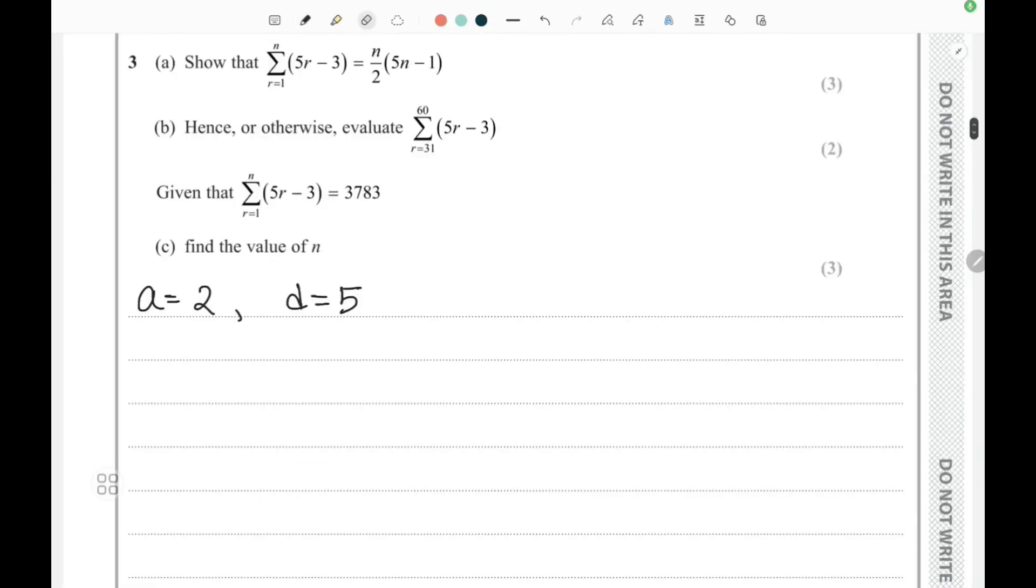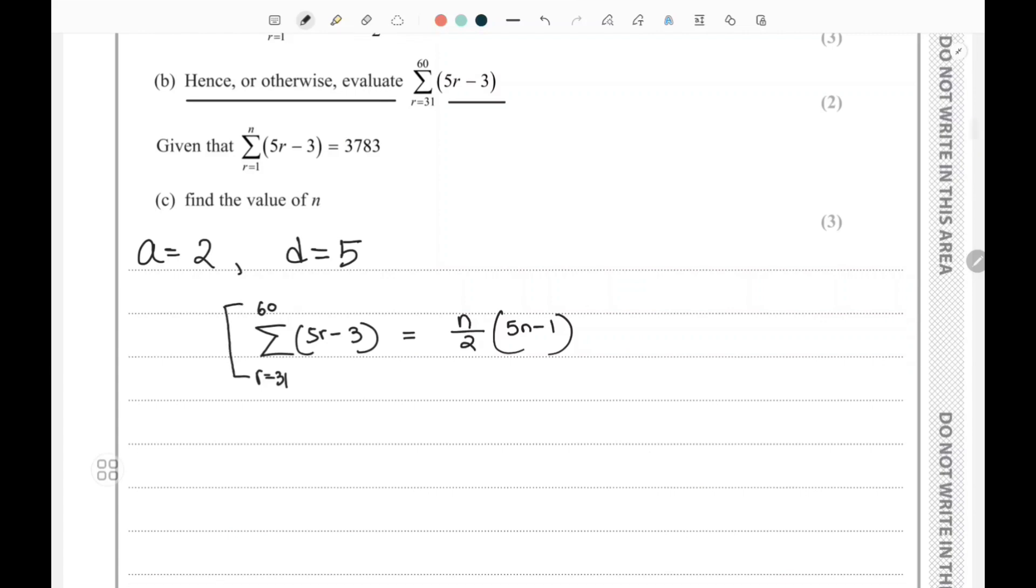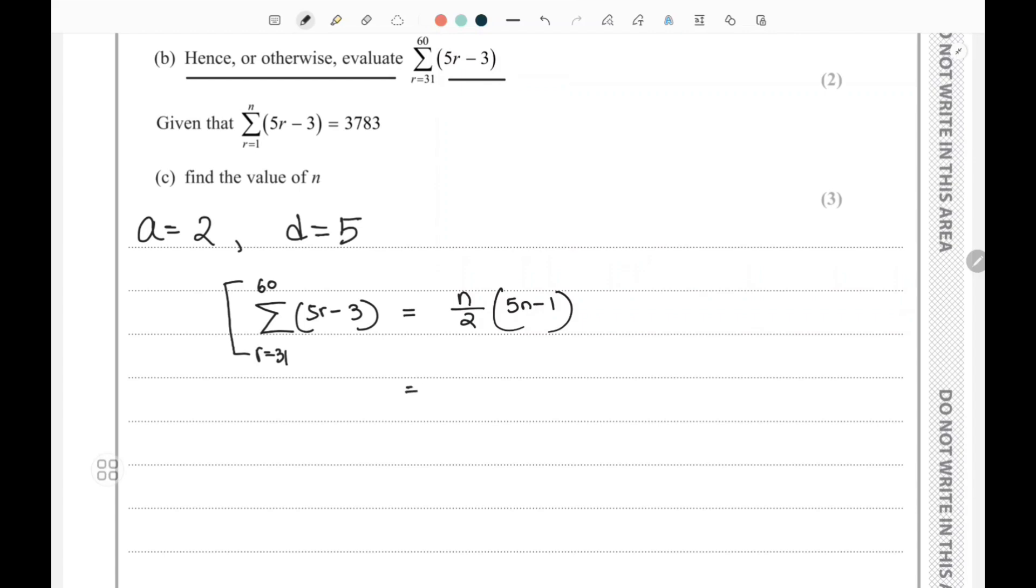Welcome to part 3b, the second part. It says hence or otherwise evaluate this value. In the previous part we successfully showed that this can be written as 5r - 3 equals n divided by 2 times (5n - 1). But here we have to find the summation from the middle.